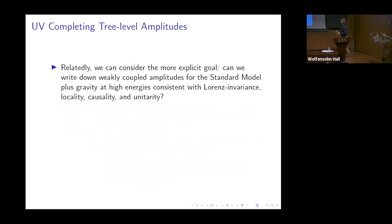Relatedly, if I'm impatient, I could have the explicit goal of: take a two-to-two standard model process in the massless limit, include gravity, and can I write down an amplitude — a tree-level amplitude — consistent with Lorentz invariance, locality, causality, and unitarity? Just anything that doesn't, on the face of it, violate these consistency checks. It's certainly a challenging thing to do for the full standard model, and challenging even for a given two-to-two process.